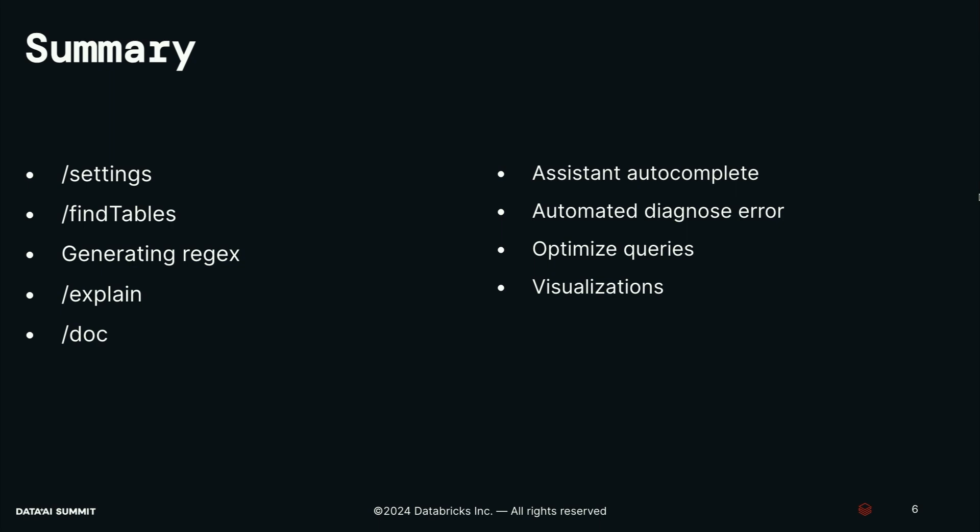As a summary for everything we went over today, we showed a lot of different tools within Databricks — how you can change your settings, use intelligent search to find tables, explain and document your code. We also showed off some of our newer features with the autofix and optimizations for your queries. And finally, we showed you how you can create visualizations from your data. To learn more about our Databricks Assistant, you can check out some of our published blogs online and stay tuned for more exciting Gen AI-related announcements here at Data and AI Summit. Thank you.